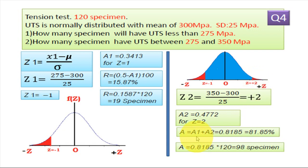Now total area A is equal to A1 plus A2, that is equal to 0.3413 plus 0.4772, it comes 0.8185. So this blue area, total area equal to 81.85%. Now we have to find out specimen falling between this blue area, that is between limit 275 to 350. So this is 275, this is limit for 350 MPa. So this blue area is 0.8185.